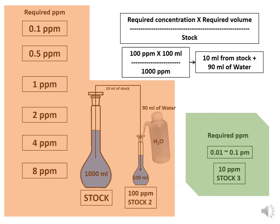If the required concentration is less than 10 ppm — for example, 0.1 ppm to 8 ppm — it is recommended to prepare a secondary stock solution of 100 ppm. Using the same formula: required concentration 100 ppm, required volume 100 ml, divided by stock 1000 ppm, we get 10 ml. Taking 10 ml from the stock and mixing with 90 ml of water gives 100 ppm of secondary stock.